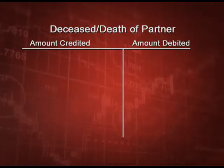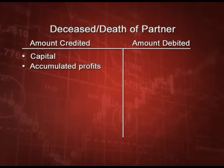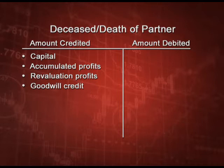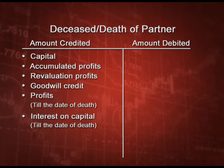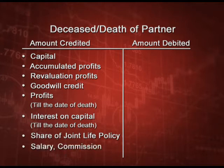Let us start with how to calculate the amount to be credited and debited to the deceased partner. The amounts to be credited are: capital, accumulated profits, revaluation profits, goodwill created, profits till the date of death (calculated on turnover or time basis), interest on capital till the date of death, share of joint life policy, and salary or commission if applicable.